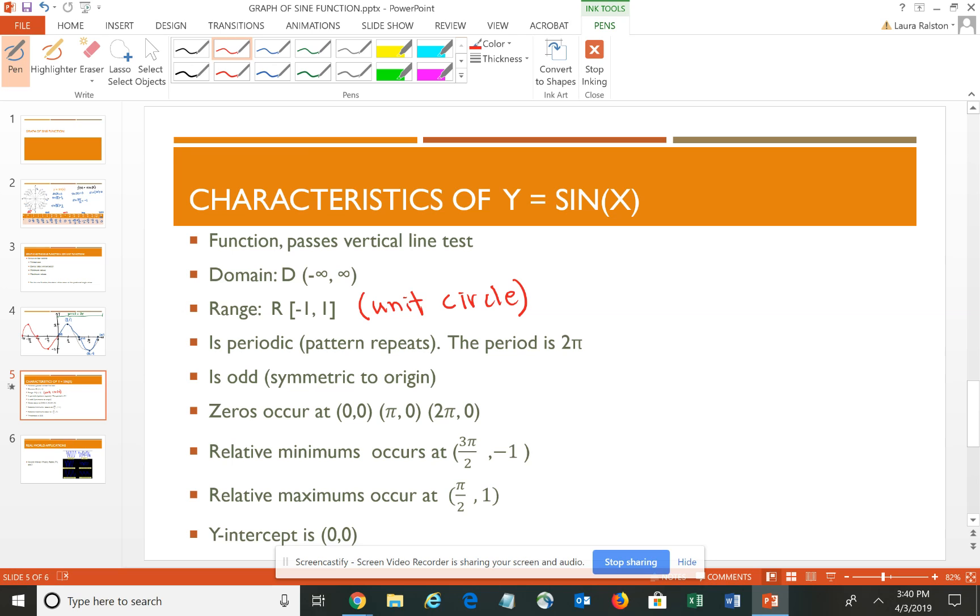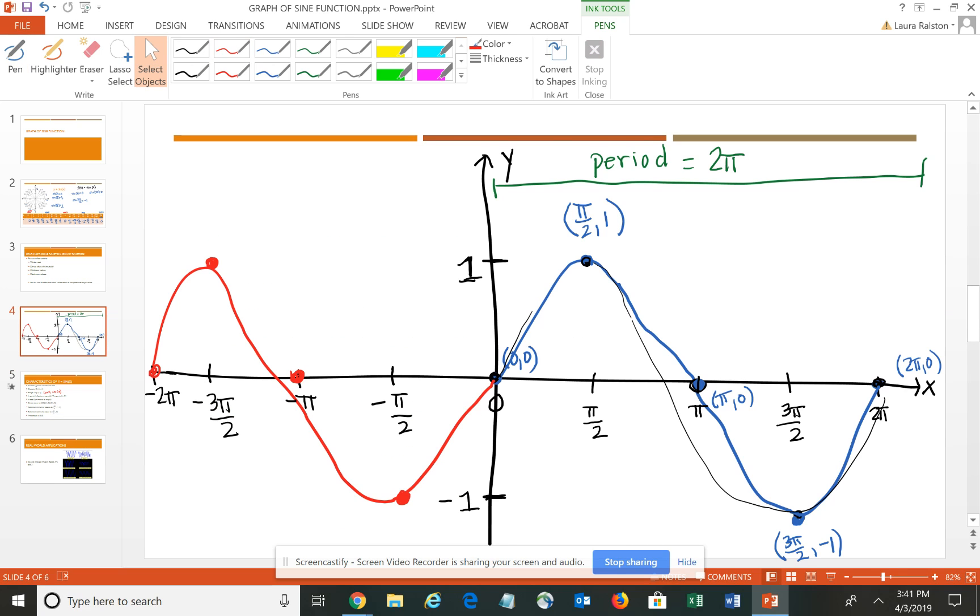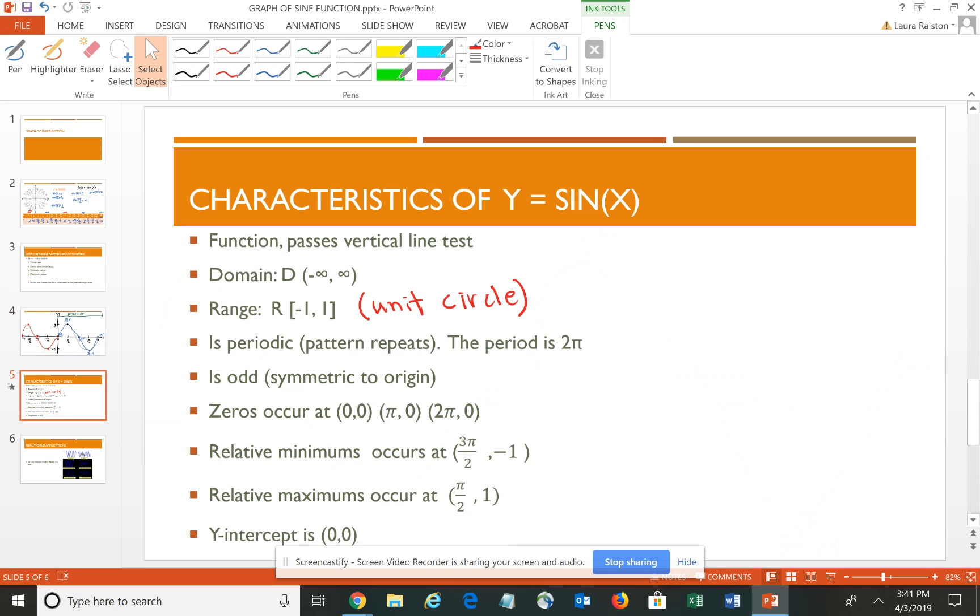It is periodic, which I tried to show you, because the pattern repeats itself, and the pattern repeats after 2 pi – it starts over again. You may not remember from algebra, but the sine function is odd because it is symmetric about the origin. You have zeros that occur basically at 0, pi, and 2 pi. So pattern-wise, basically your zeros occur every pi units. Your relative minimums occur at 3 pi halves every revolution.